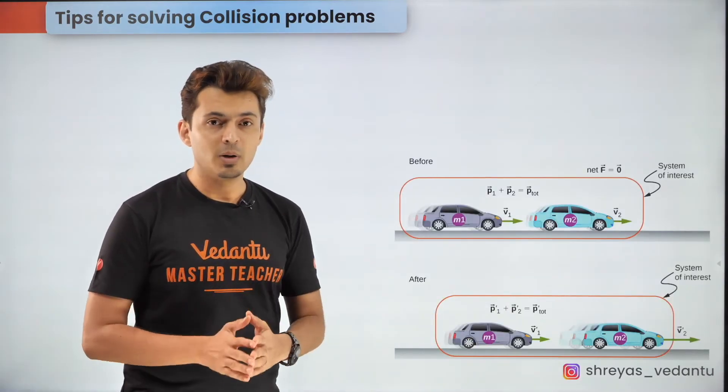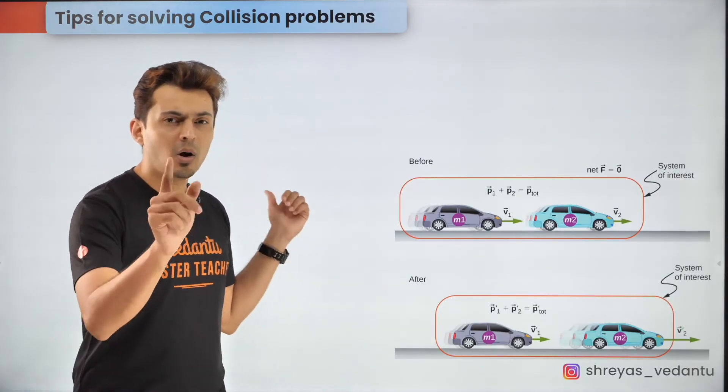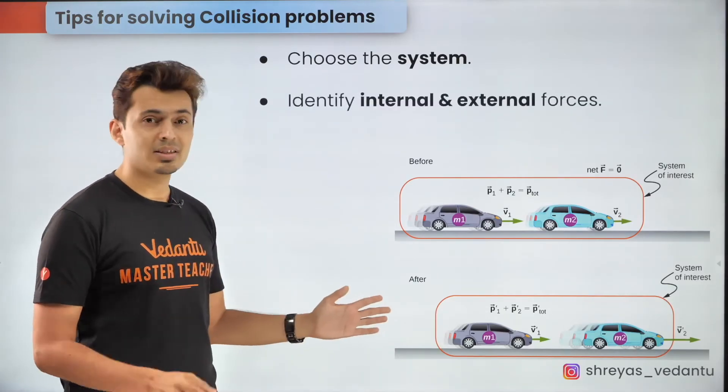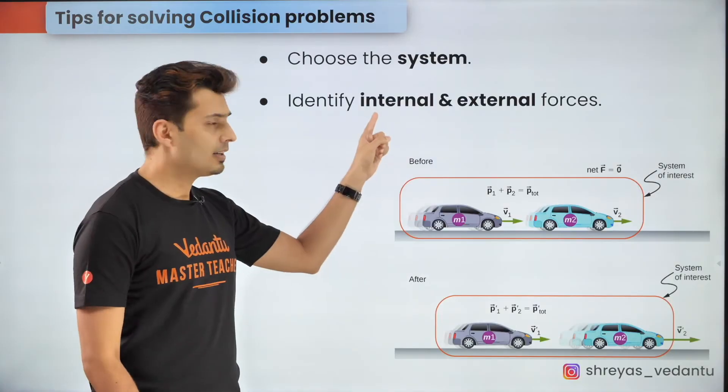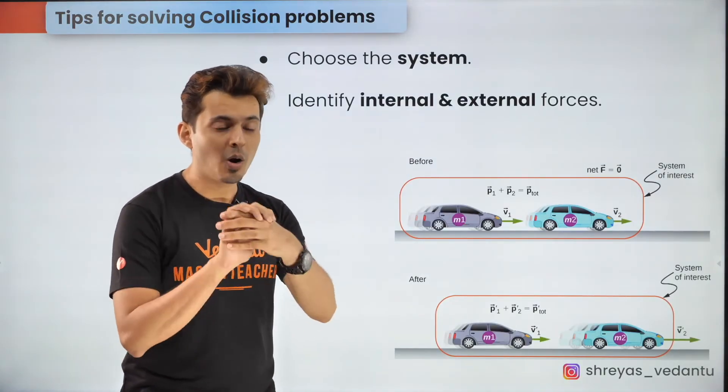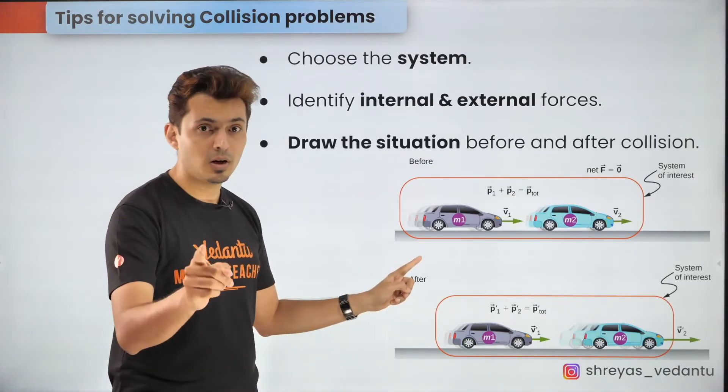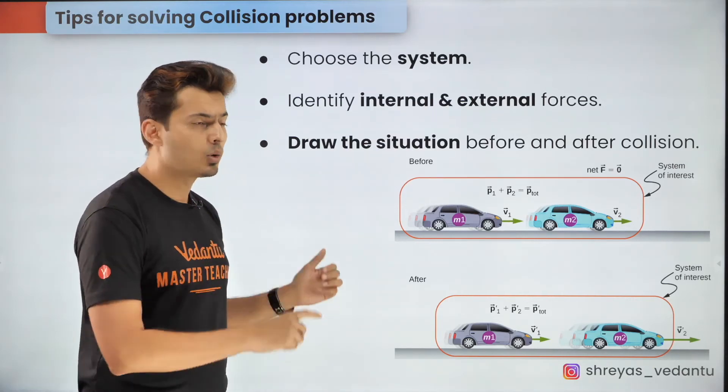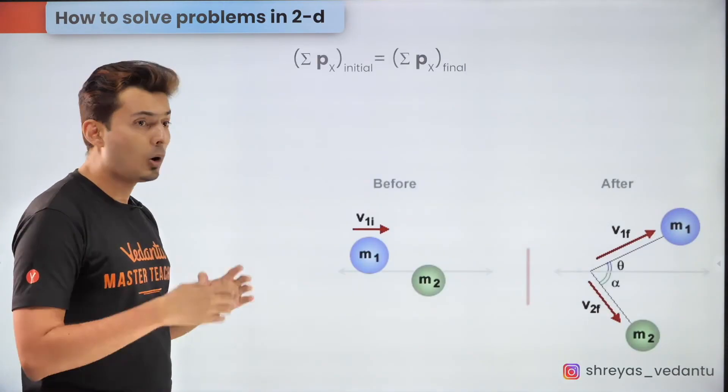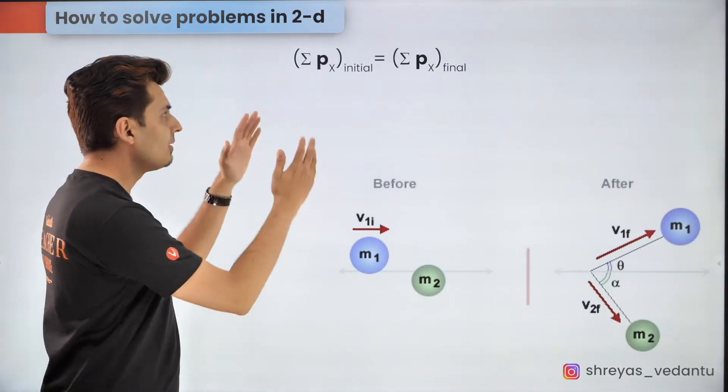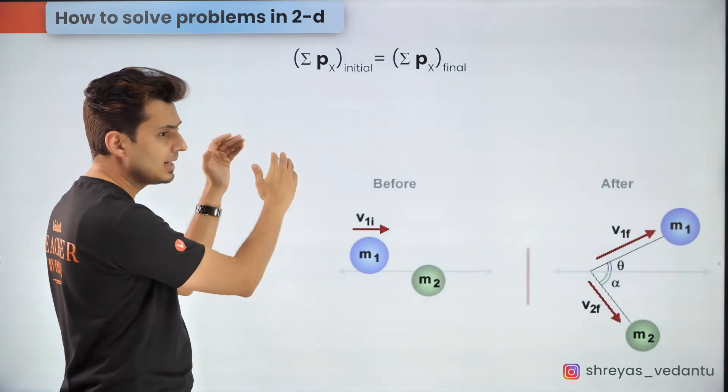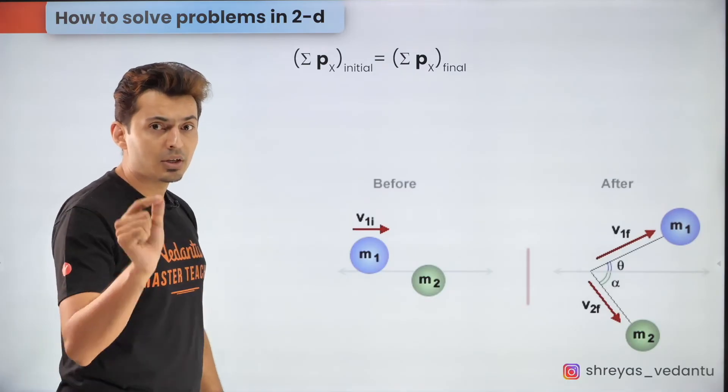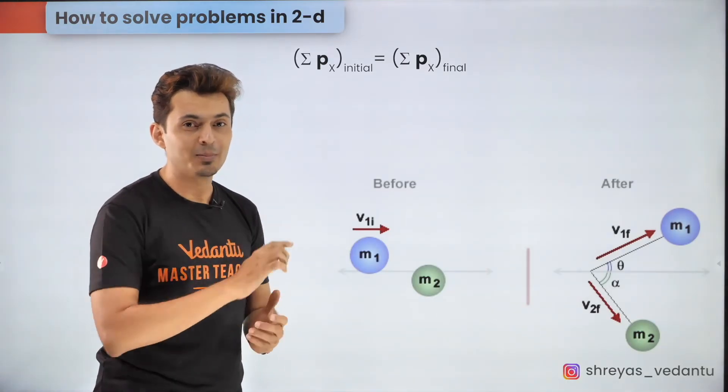A lot of mistakes can easily be avoided by following some simple tips and guidelines. Always start by identifying the system of interest and also identify which kind of forces are internal and external. Keep in mind that the internal forces do not affect the total momentum of the system. Also it's a good practice to draw the situations before the collision and after the collision separately to avoid any confusion and to get more clarity. After that start writing down the law of conservation of momentum in the equation form where you put all the momentums before the collision on one side and all the total momentums after the collision on the other side. Keep in mind that you need to take into account the signs because momentum is a vector quantity.